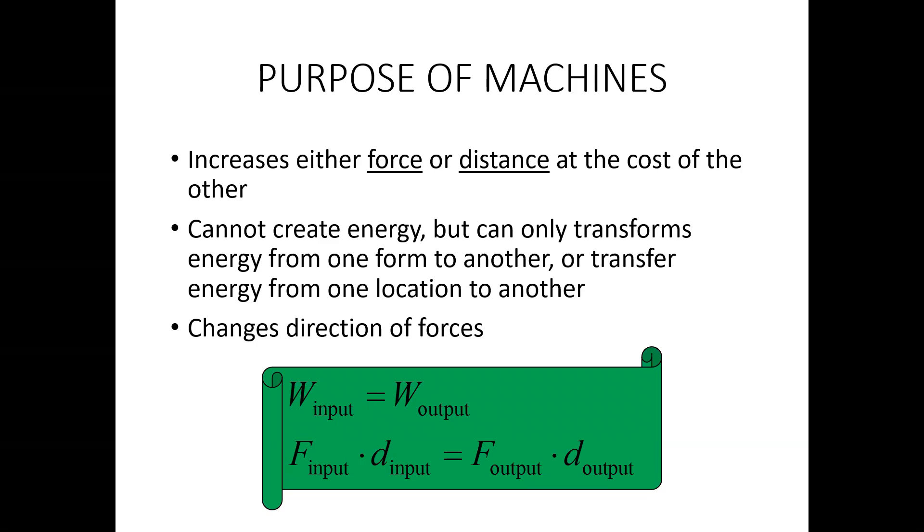If you remember the equation for work, it is force times the distance. And just on a side note, force and distance have to go the same direction for this to work out. So you have to have an input force and it has to be applied over a certain amount of input distance. And then the machine's going to take that and jumble it up and do its magical thing, and then it's going to output a force and a distance.